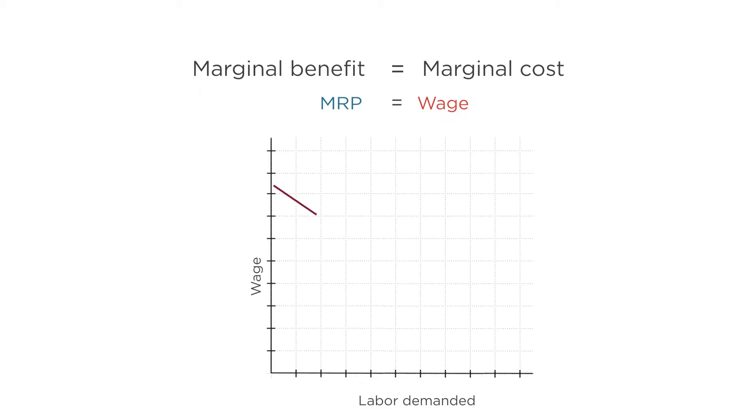Graphically, this will result in a downward sloping demand curve. Why? Well, because at each wage, the firm sets wage equal to the marginal revenue product of labor, which, as we saw earlier, is just the marginal product of labor times the price.